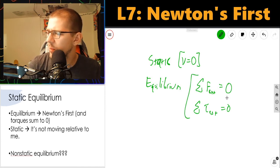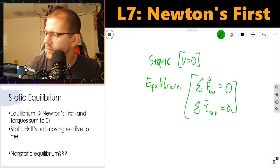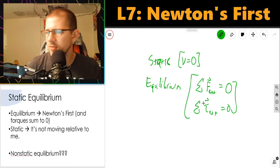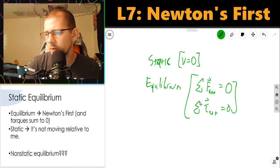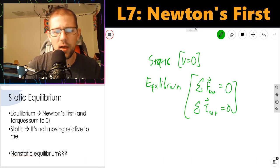For something to be in static equilibrium, we mean that there's no net force, there's no net torque, and our velocity is zero. Equilibrium means that forces and torques cancel. Static means that the velocity is zero.